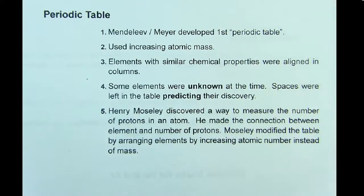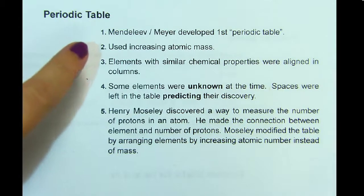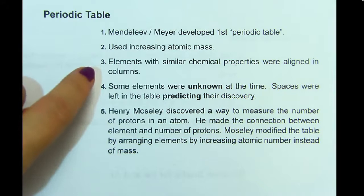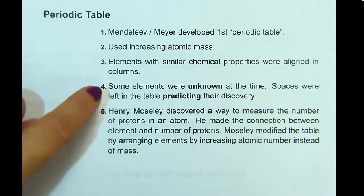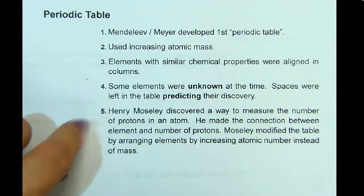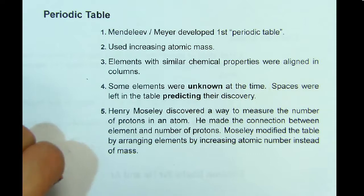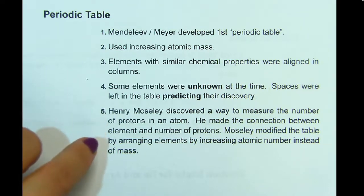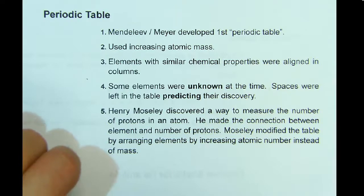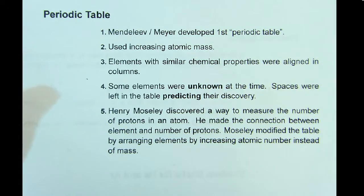The Periodic Table. Mendeleev and Mayer developed the first periodic table using increasing atomic mass. Elements with similar chemical properties were aligned in columns or groups or families, and some elements were unknown at the time, with spaces left in the table predicting their discovery. Henry Mosley discovered a way to measure the number of protons in an atom, made the connection between element and number of protons, and modified the table by arranging elements in increasing atomic number instead of atomic mass.